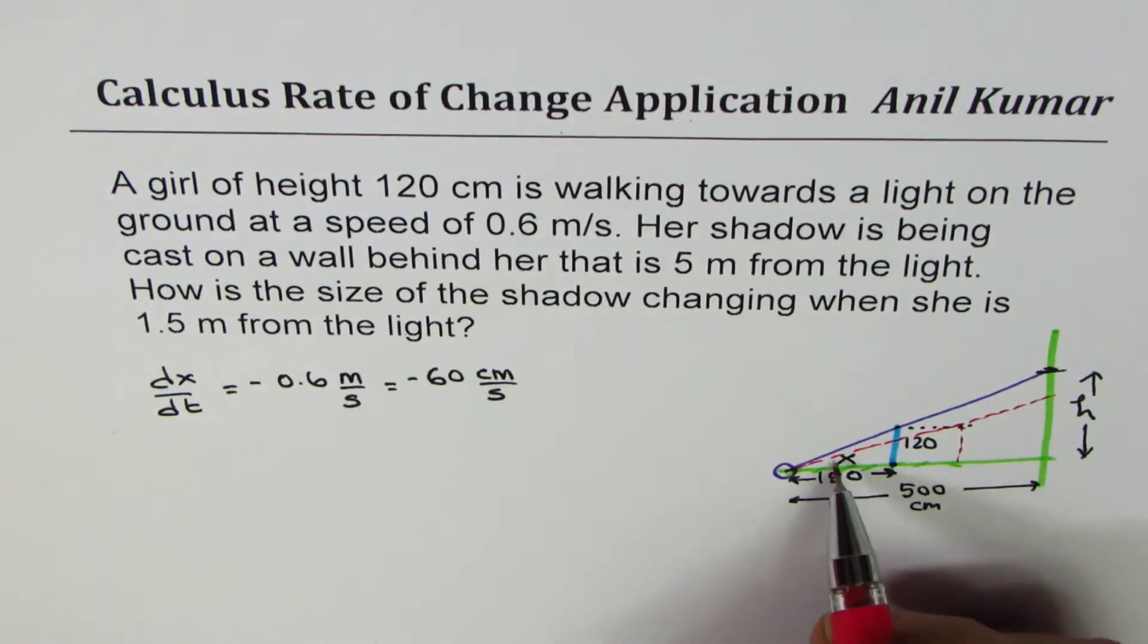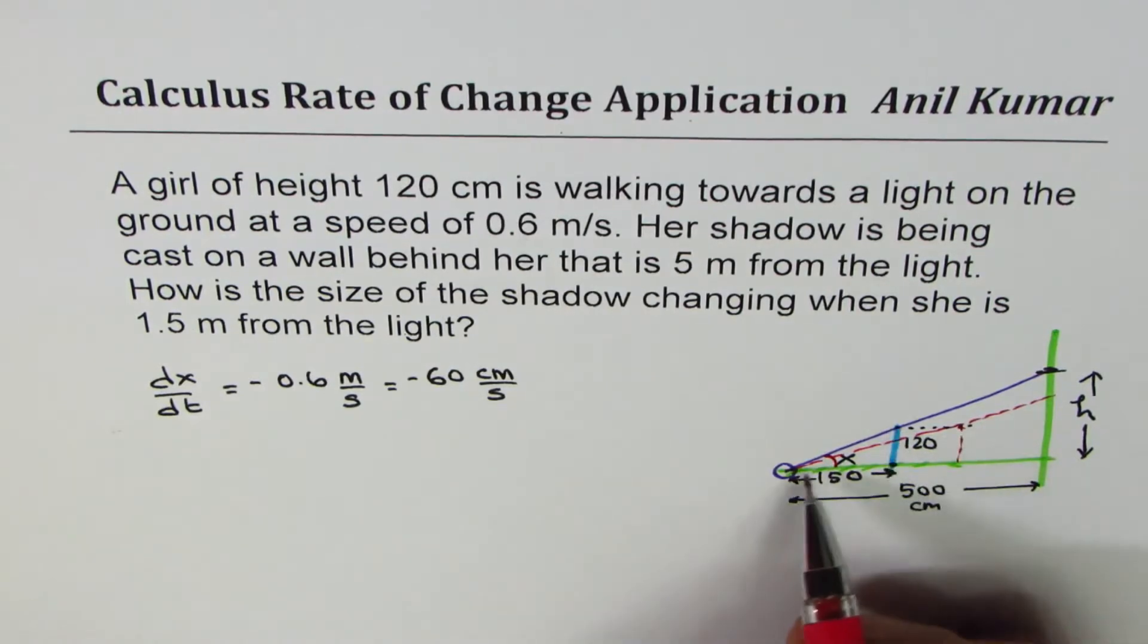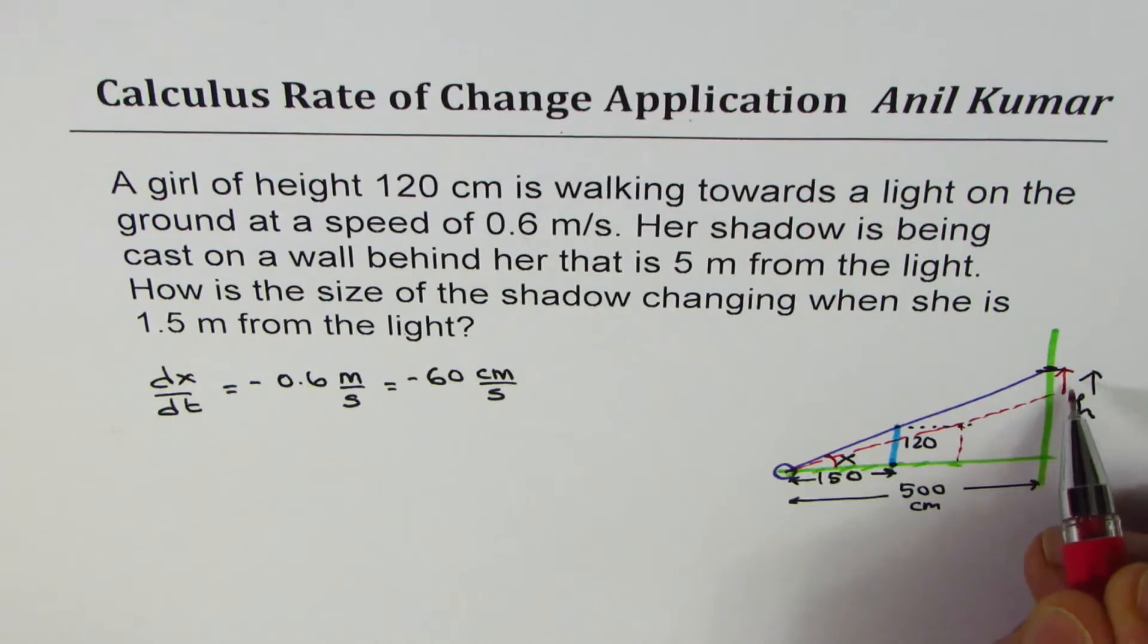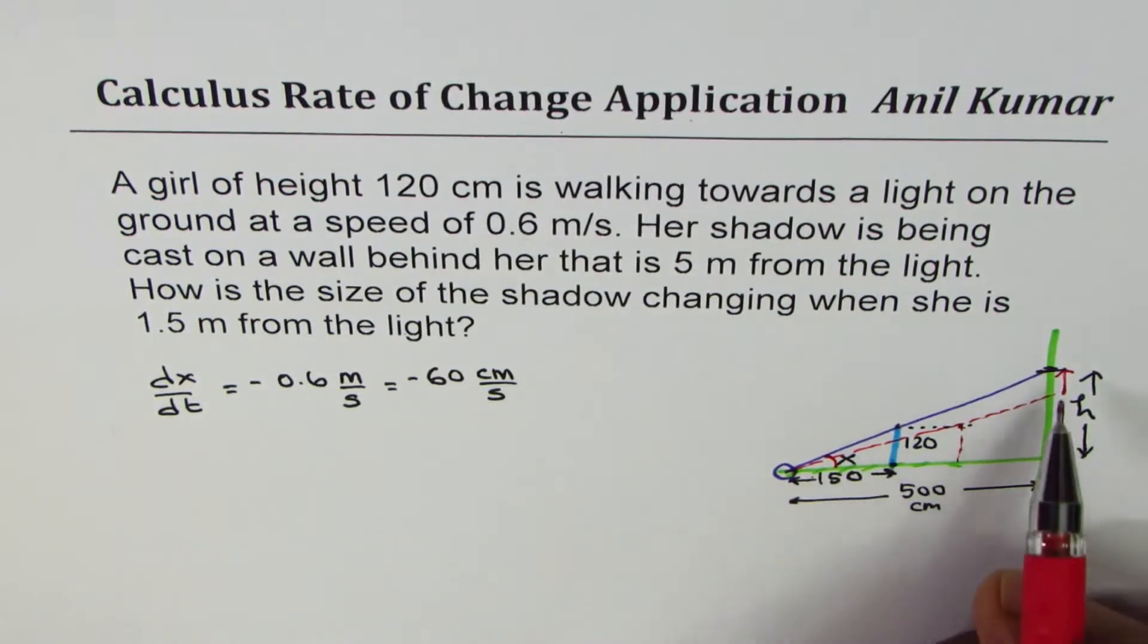So what really changes is the angle. So as the girl approaches the light, the angle changes, and so the shadow on the wall actually increases. Do you see that increase? We need to find that when girl is 150 centimeters away, what is the rate of change of height?